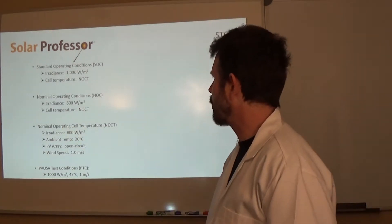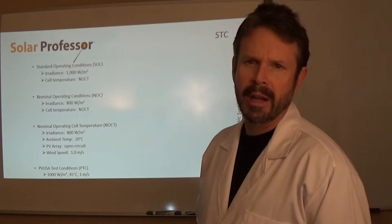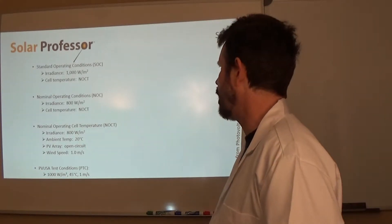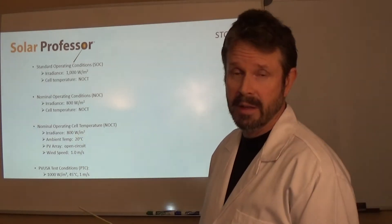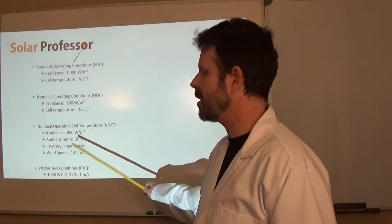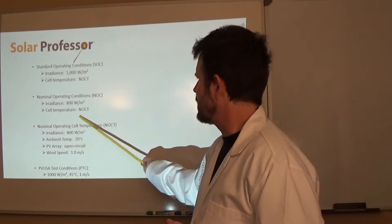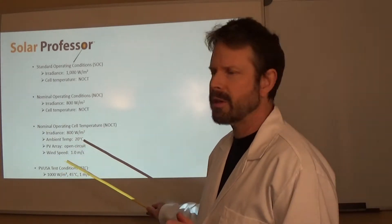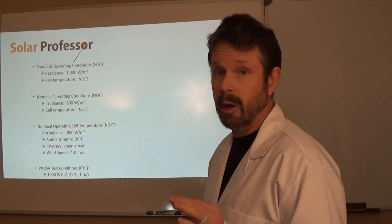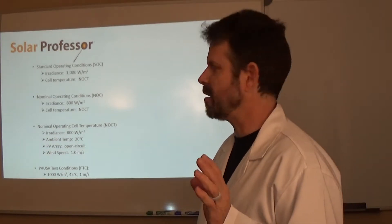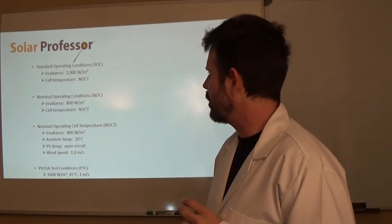Then we have nominal operating cell temperature, which is what nominal operating conditions is measured upon. And that provides an ambient temperature, which is different than standard test conditions as well. That's only 20 degrees C instead of 25 degrees C. Also, this is measured at open circuit voltage. And really, that's when the module is at an inert state. Over here, we have a wind speed added as well.